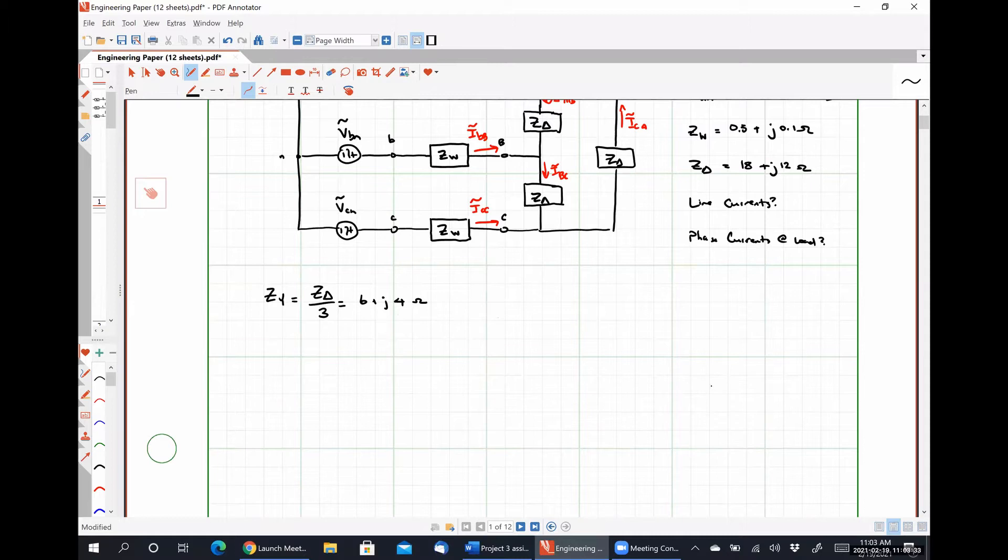From here, our single phase equivalent circuit is going to look like this. Here's VAN. We have a line impedance that we need to pay attention to. Here's A. Here's N. Here's capital A. And then it looks now like we have that impedance ZY there. And in this case, in our real system, the neutral conductor literally does not exist. But again, because we know that the voltage drop over the neutral conductor is zero and the current flowing through the neutral conductor is zero for a balanced three phase system, even if its actual impedance is infinitely large because we have an open circuit, we can still treat it like a short circuit to use our single phase equivalent.